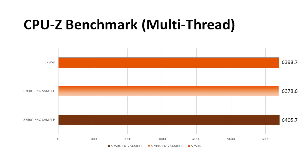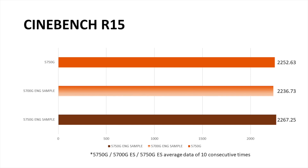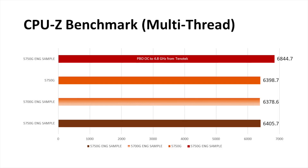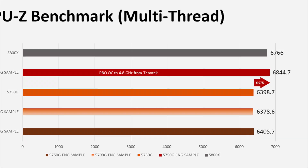Last but not least, here I compare these two engineering samples with the retail final version. Regardless of the potential for overclocking, all three APUs' performance is almost the same. Unless you manually enable PBO overclocking to 4.8GHz — in that case, its scores could even surpass the 5800NX. Finally, that's why the previous rumor considered the last batch of engineering samples to represent the 5800MG.